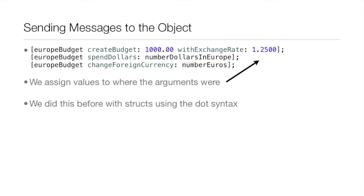When sending messages to the object, you can see three messages sent to this europe budget object. We're assigning values to the arguments — for example, 'createBudget' takes a 'budget' argument, so we assign a thousand dollars to the budget ivar. This is similar to what we did before using structs with dot syntax, but now we use messaging.